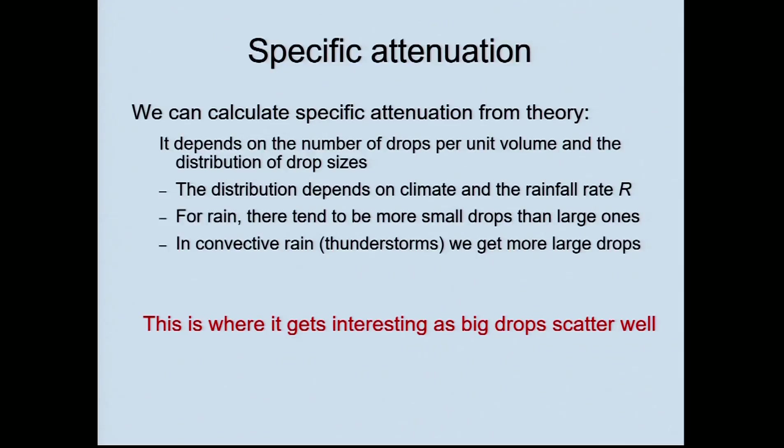The distribution of rain depends on the climate. In some parts of the world, like Manchester, it rains all the time but not at a high rate and not with very large drops. Whereas in places like the Amazon rainforest, it doesn't rain so much, but when it does it rains with very big monsoon-type drops. That has an interesting impact: if you try to make a satellite link going straight through the atmosphere from the UK, although it rains a lot, the attenuation at higher frequencies is not all that bad. Whereas in areas with tropical rain, the attenuation can be quite severe. Thunderstorms tend to be the causes of the largest drops.